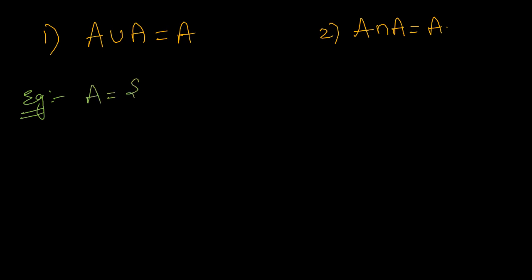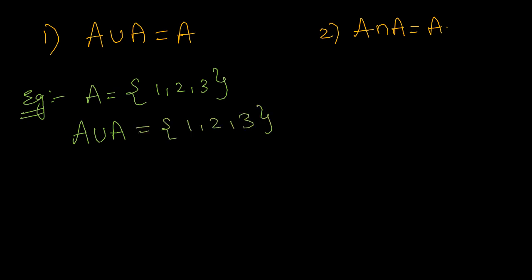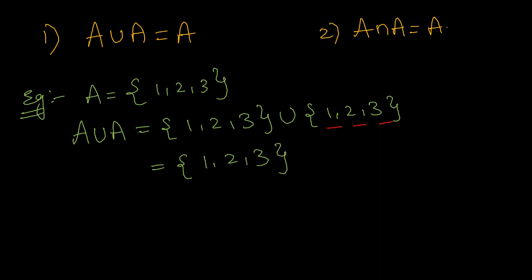Let us consider set A equals to {1, 2, 3}. We need to prove A union A must be equals to A. So let us consider A union A, which is {1, 2, 3} union {1, 2, 3}. The meaning of union is to consider all the elements in both the sets. I take 1, 2, 3 from the first set. In the second set there is 1, 2, 3 again — should I take this? No, because a set should contain only distinct elements. So A union A equals {1, 2, 3}, which is nothing but our original set A. So A union A must be equals to A.